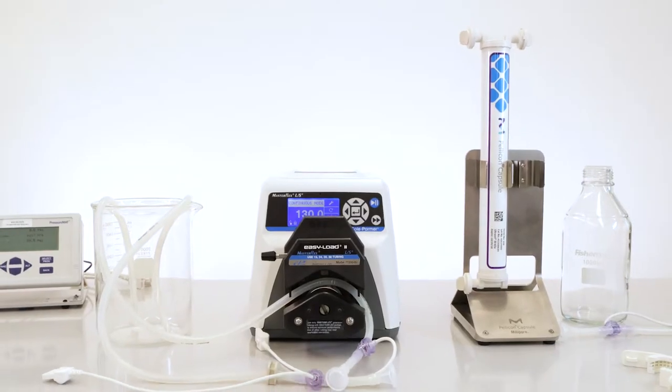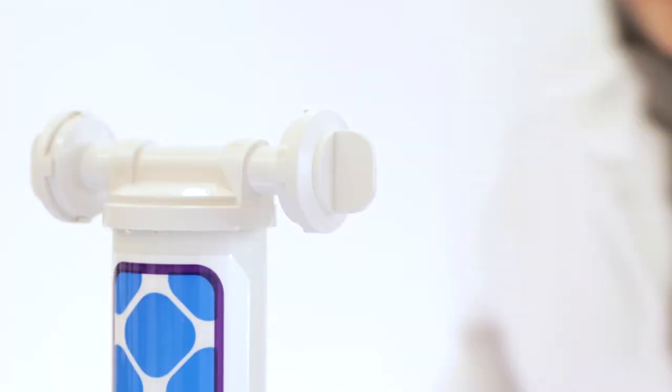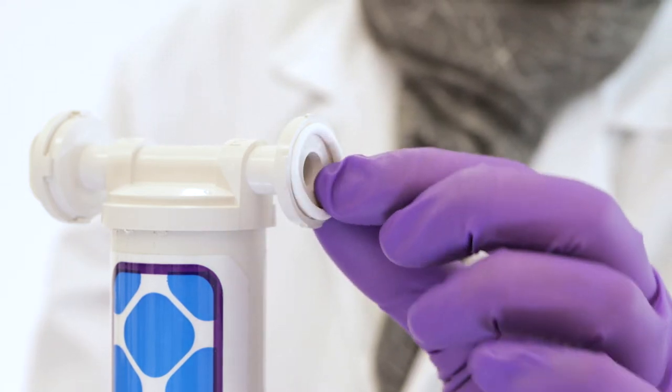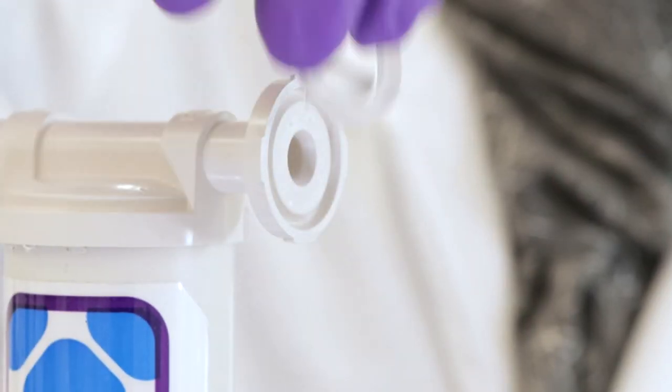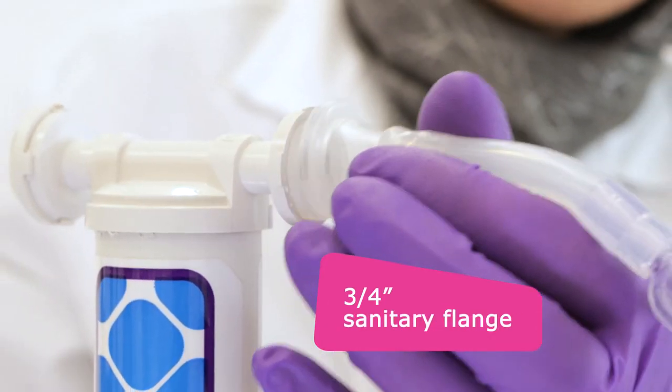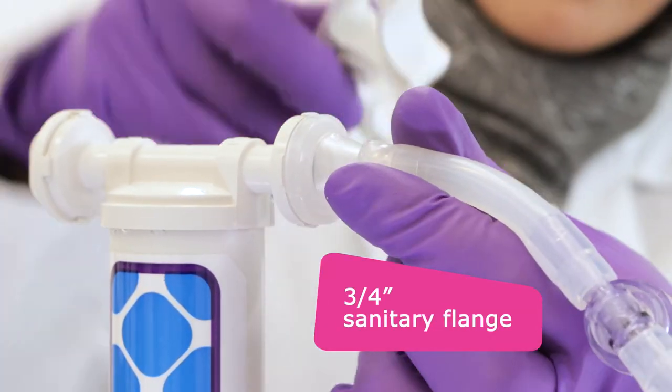To integrate the capsule in your TFF system, first remove the permeate port cap by twisting it off and make sure the O-ring is removed. Place a sanitary gasket at the port and use a three-quarter inch sanitary fitting and clamp to connect the permeate line.